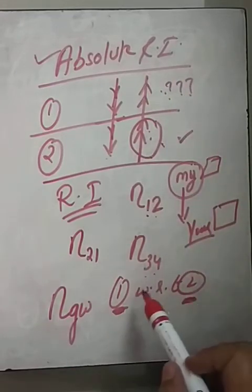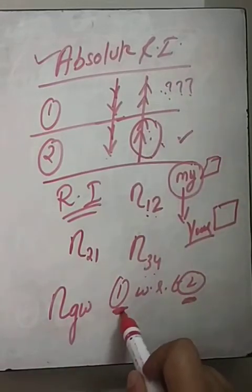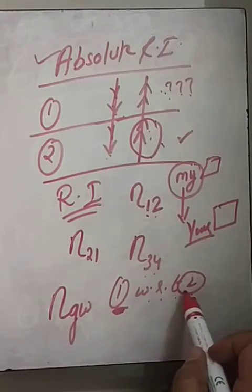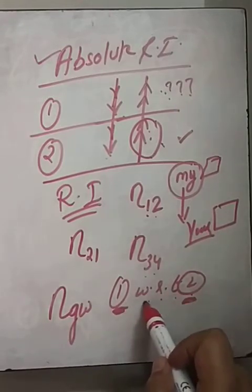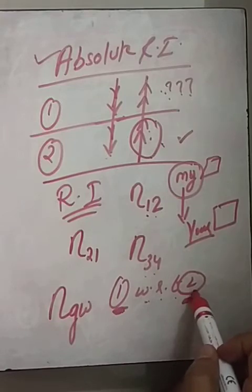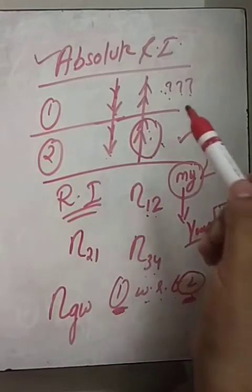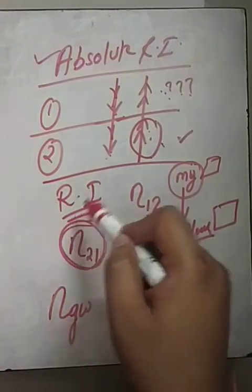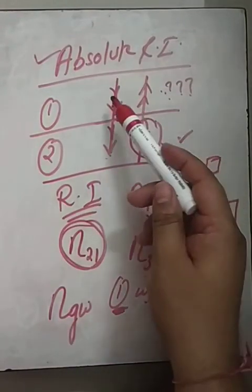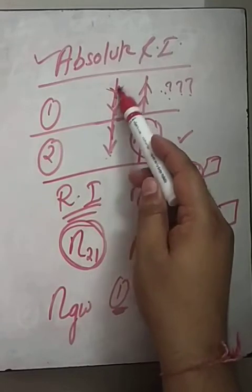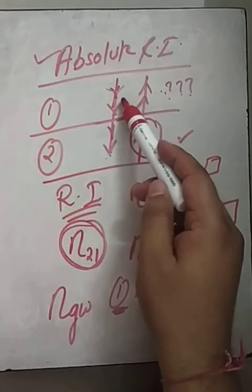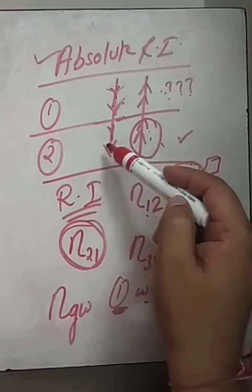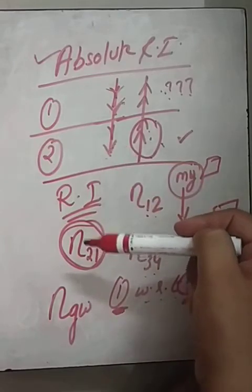The refractive index of medium 1 with respect to medium 2 describes light coming from medium 2 into medium 1. Similarly, the refractive index of medium 2 with respect to medium 1 describes light coming from medium 1 going into medium 2. This tells us the relationship between medium 1 and medium 2.